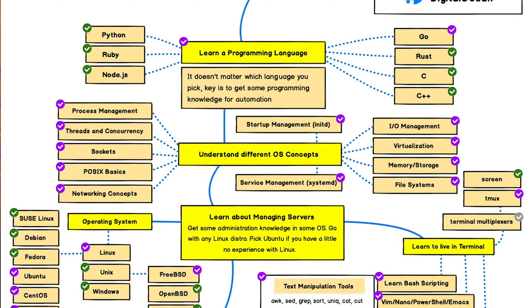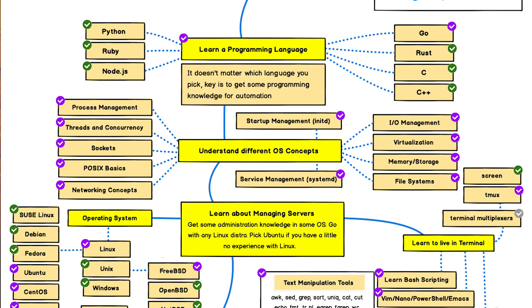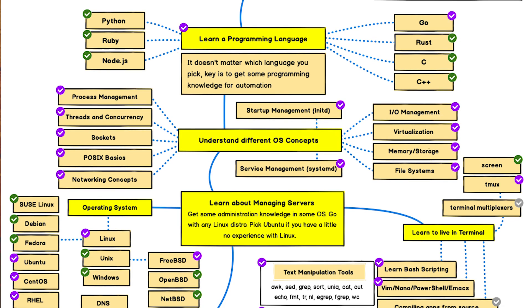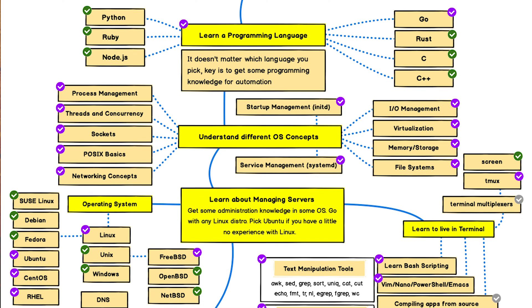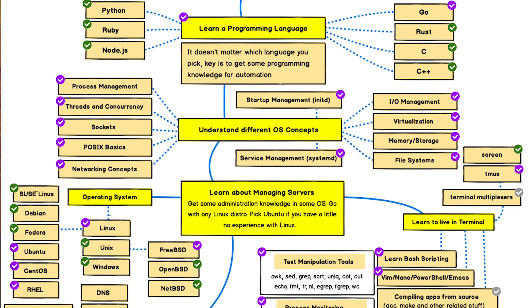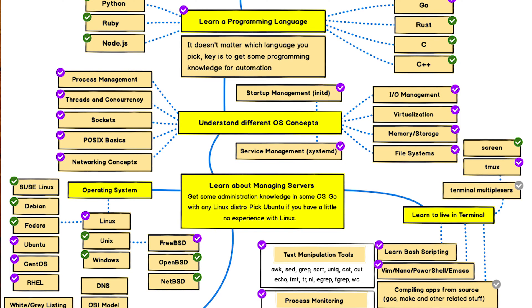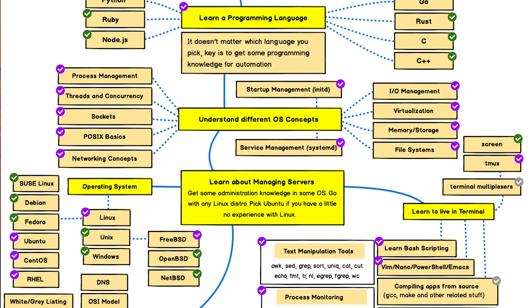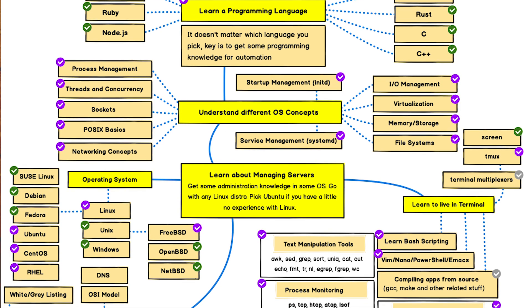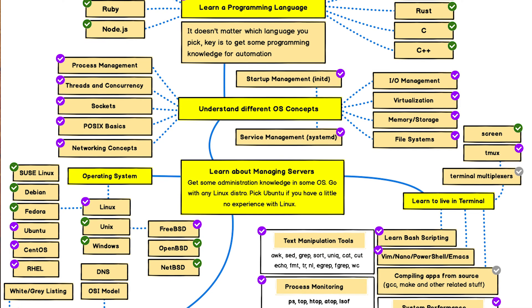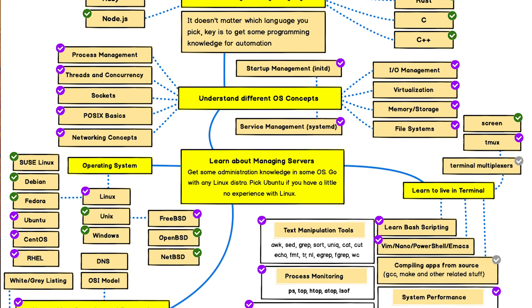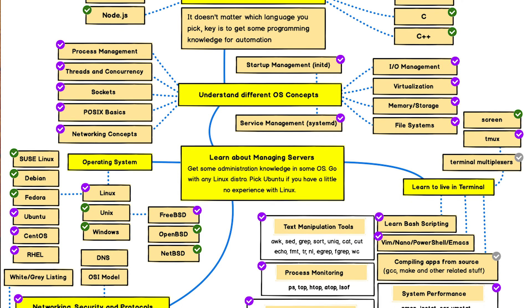The DevOps team should build understanding of operating system concepts like process management, I/O management, file systems, virtualization, networking concepts, and memory and storage management. The team must be aware of one or more operating systems like Linux, Windows, or Unix and their variants. Linux variants include SUSE Linux, Debian, Ubuntu, Fedora, CentOS, and Red Hat Enterprise Linux. Unix variants include FreeBSD, OpenBSD, and NetBSD. The objective is to learn about managing servers.